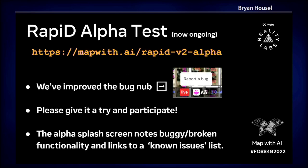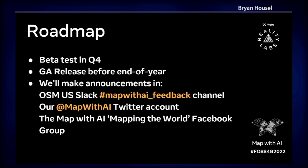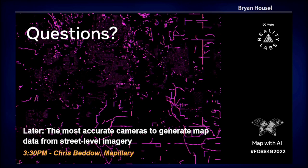Next steps: we have an alpha that was released a couple of days ago. You can use an improved bug-reporting button in the lower right with a bug ingestion form on GitHub. Try it out, let us know what you think, and let us know if anything breaks — we expect bugs and we're hoping you'll help us find them. You can find us in the OSM US Slack, on Twitter at MapWithAI, or on our Facebook group. We also have birds-of-a-feather sessions going on in room 12 now, covering Mapillary, Daylight, and Rapid — come chat with us.